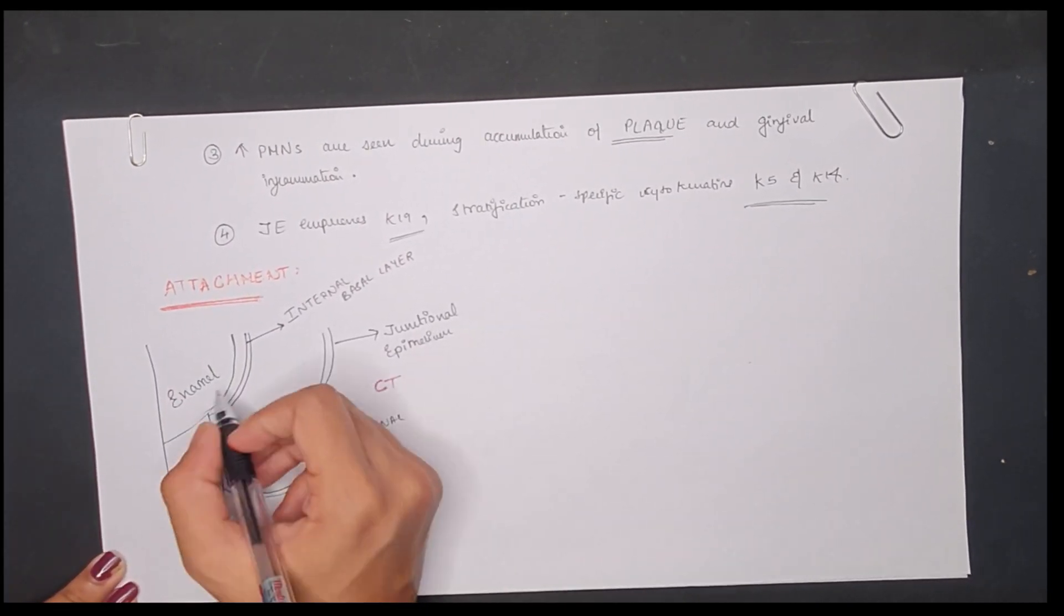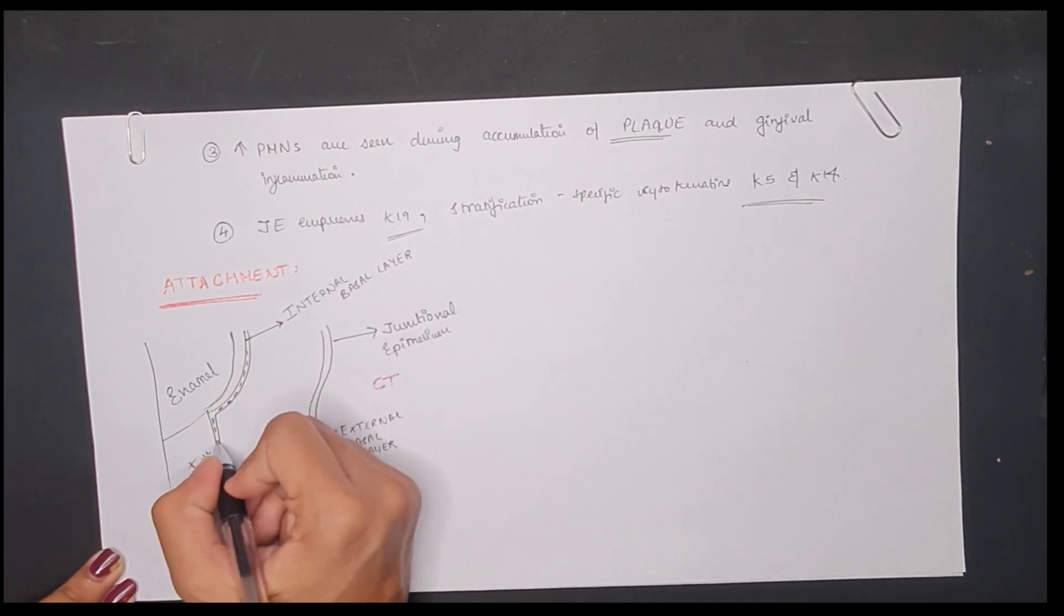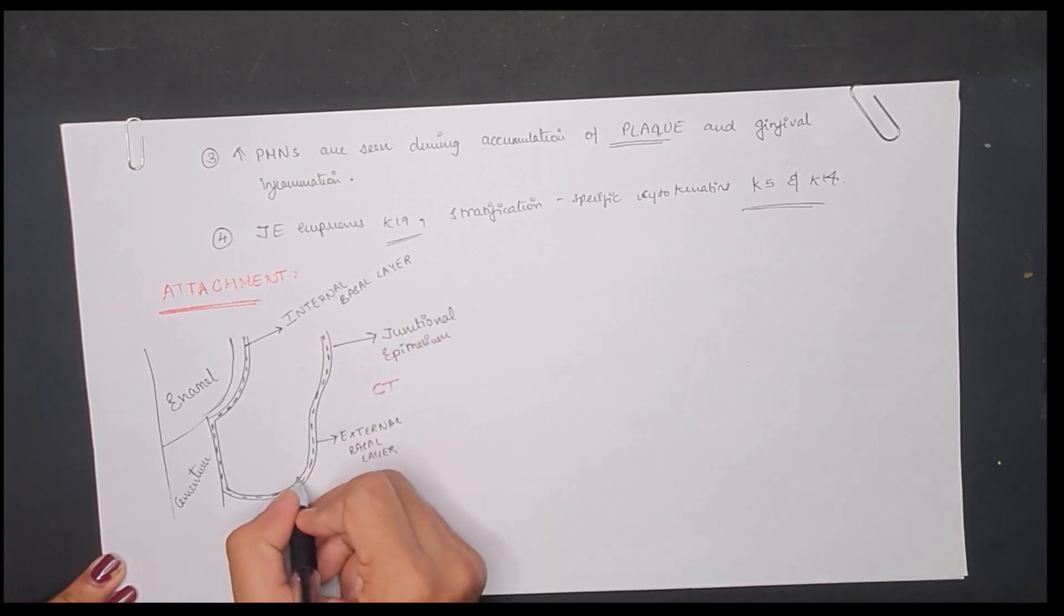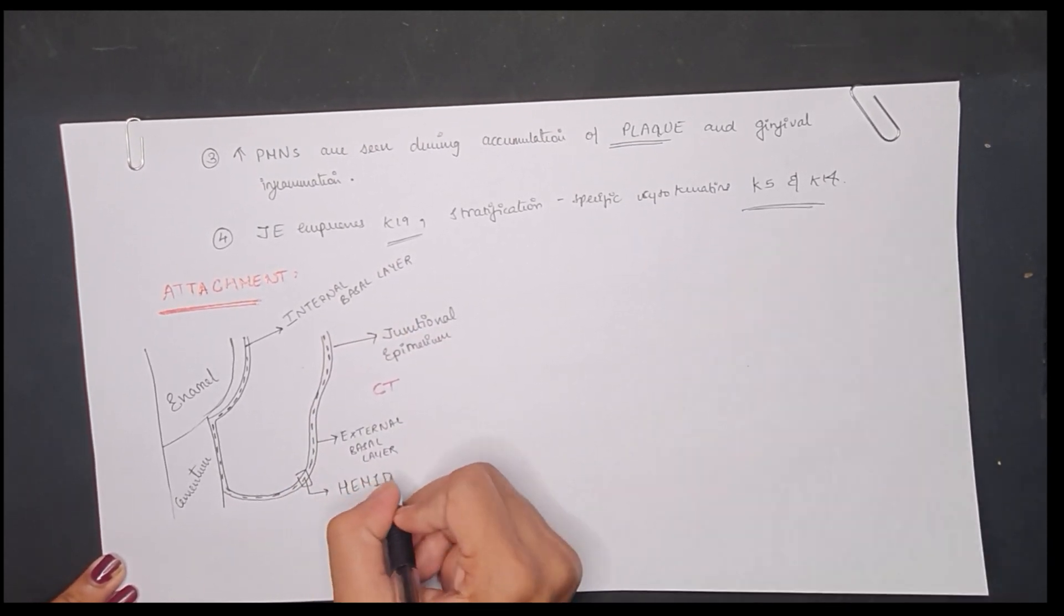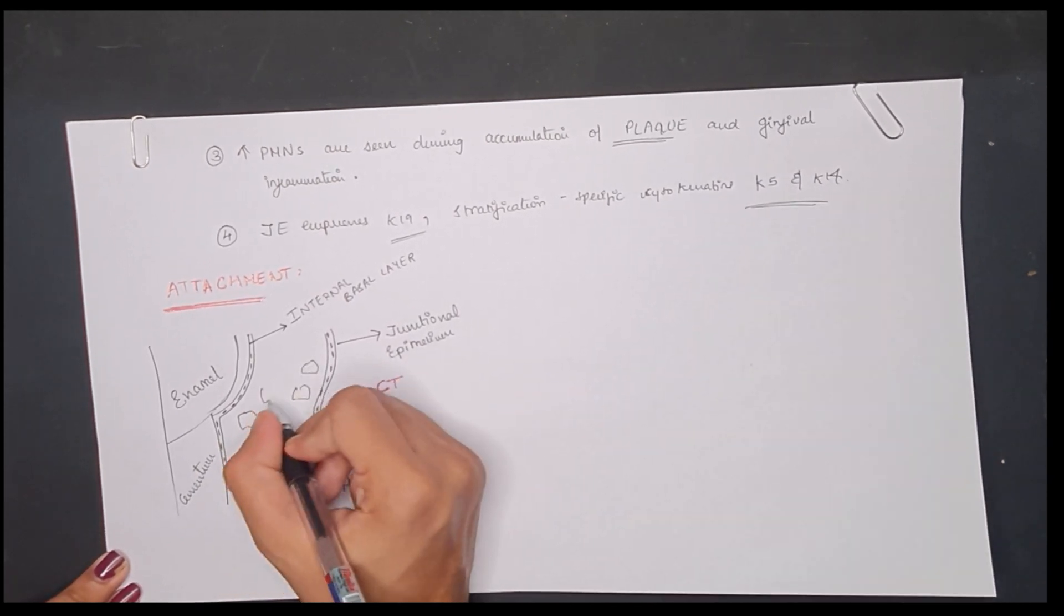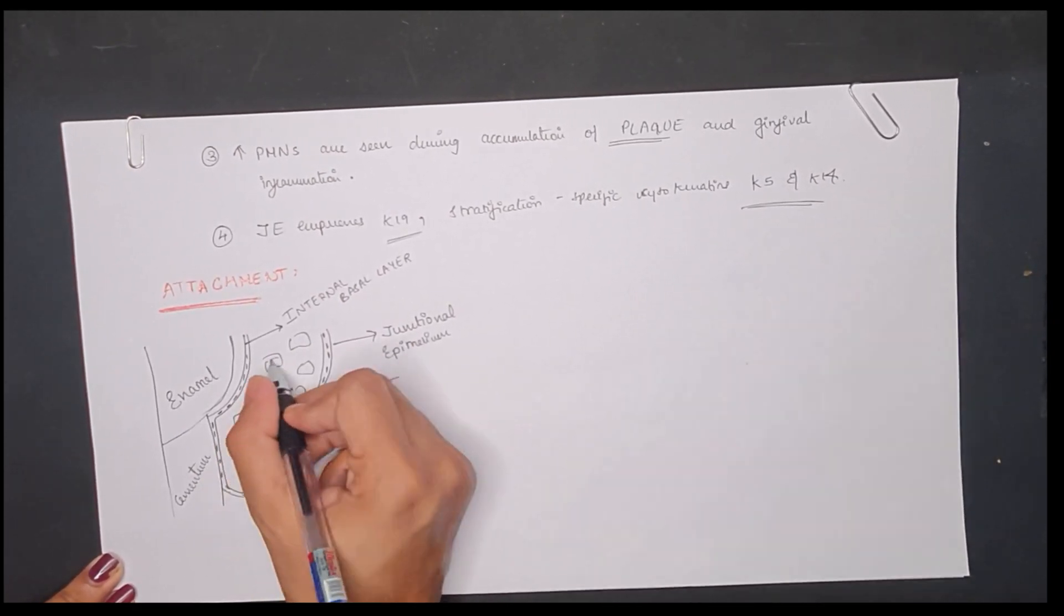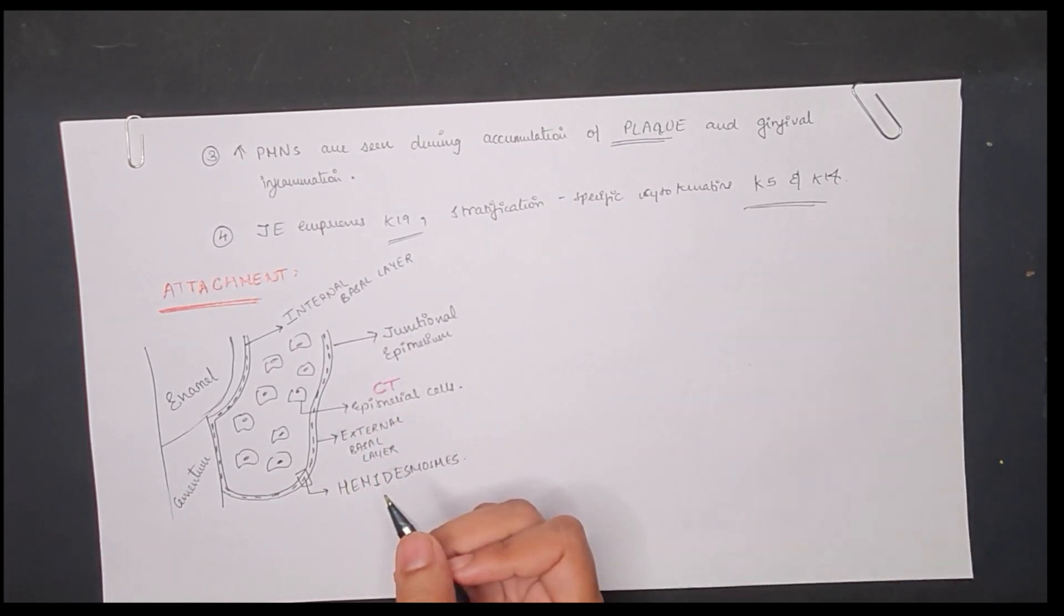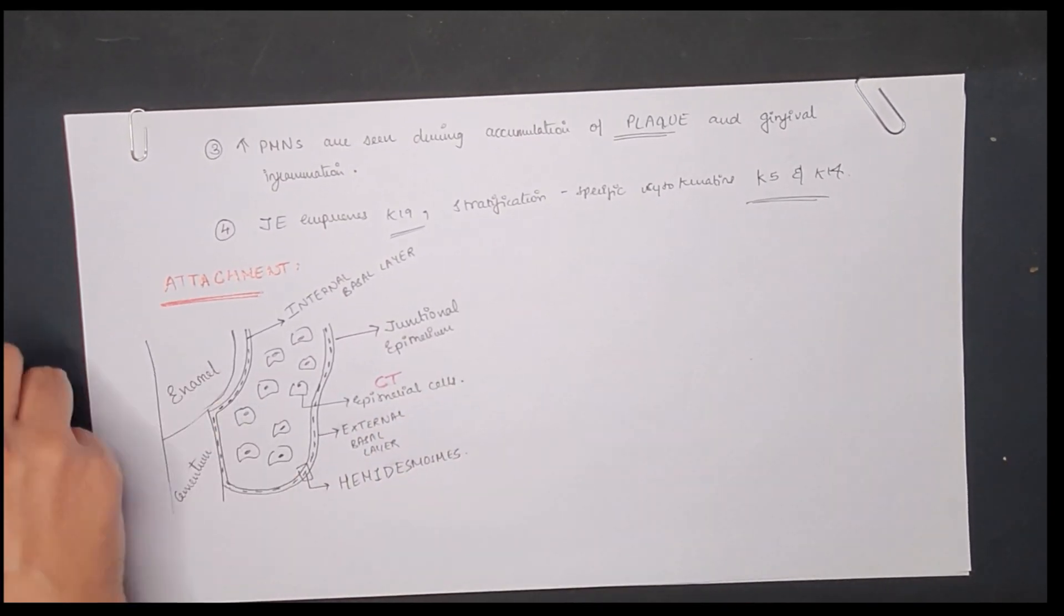In it, it is facing the connective tissue of the gingiva. These are the hemidesmosomes which are present and which help in the attachment of the junctional epithelium. These are the epithelial cells in the junctional epithelium which consist of other organelles like Golgi complex and ribosomes and other activities which we will discuss further.